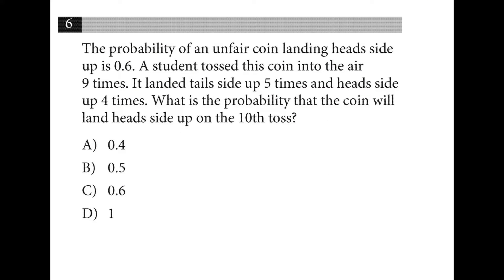Probability of an unfair coin landing head side up is 0.6. You've tossed it 9 times and it has landed tail side up 5 times and head side up 4 times, which has nothing to do with the 10th toss. It's completely independent, so it's still just 0.6.